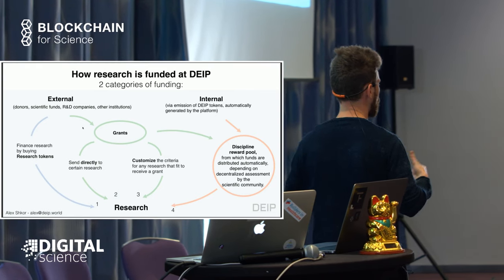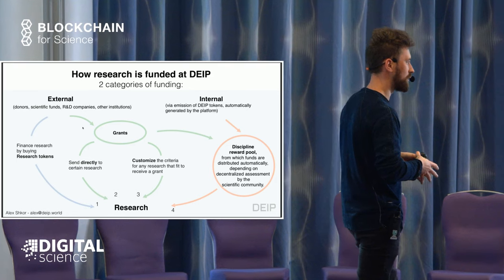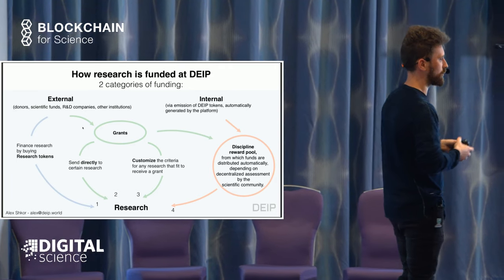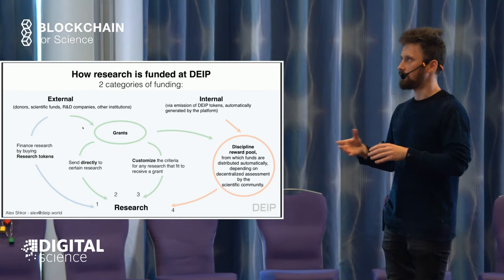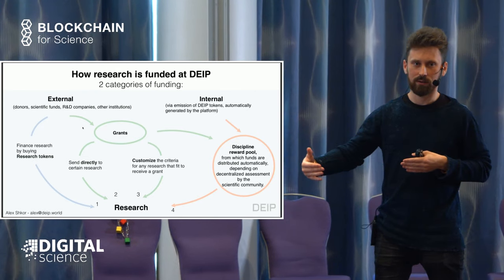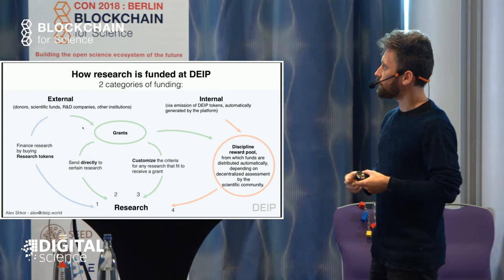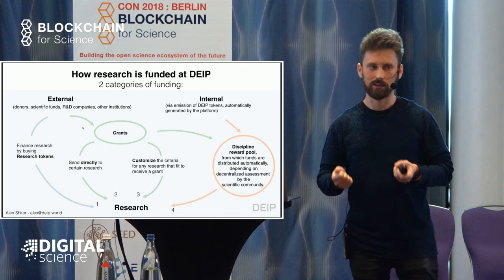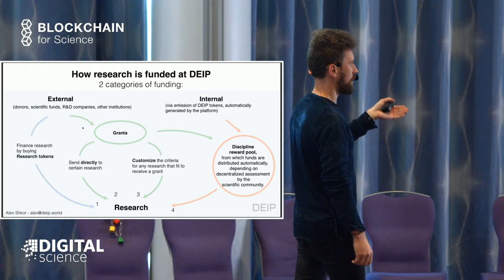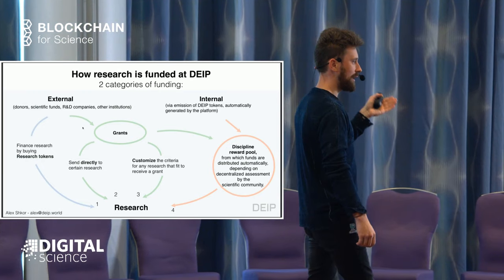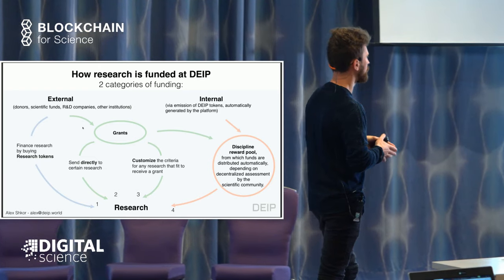You don't need to trust anyone. If you've done a scientific contribution, you will be awarded by the protocol — it's all in the algorithm, so you don't need any intermediary. And grants can also be automated with this system, because the same way we distribute rewards from internal currency, grants can be allocated for a specific discipline and distributed to research projects within that discipline.